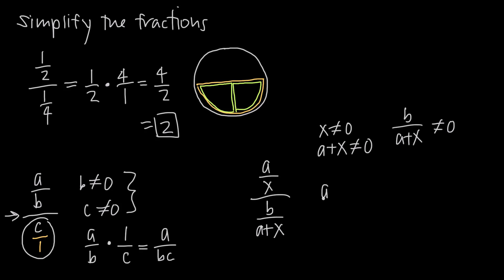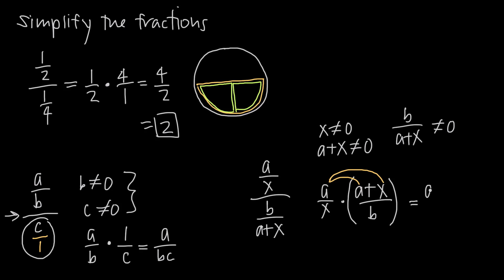Then we do our math. We take the numerator fraction a over x, and instead of dividing, we multiply and flip b over (a plus x) upside down to get (a plus x) over b. This is where it gets a little tricky — because we're multiplying, we need to apply the distributive property and distribute the a across (a plus x). Putting parentheses around the fractions helps remind you. So the numerator becomes a times a, which is a squared, plus a times x, which is ax. The denominator is x times b, written in alphabetical order as bx. So the final result is (a squared + ax) over bx.